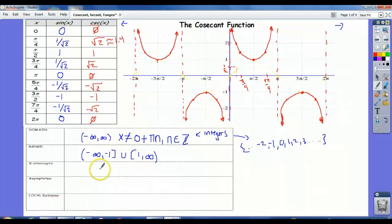The x-intercepts, there are none. The asymptotes, well, we just spent a couple minutes describing the asymptotes. They're at x equal to 0 plus pi n, where n is an integer. Right? That's where the asymptotes are.